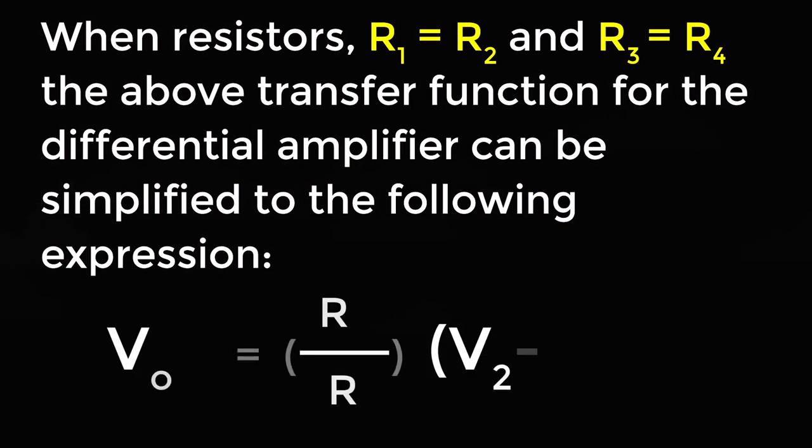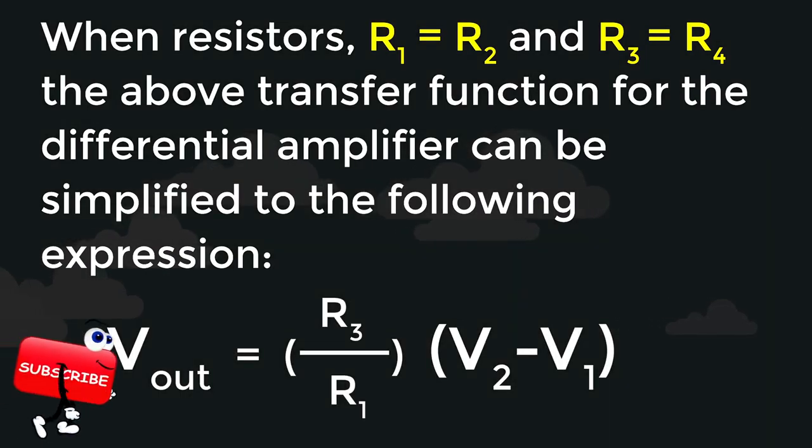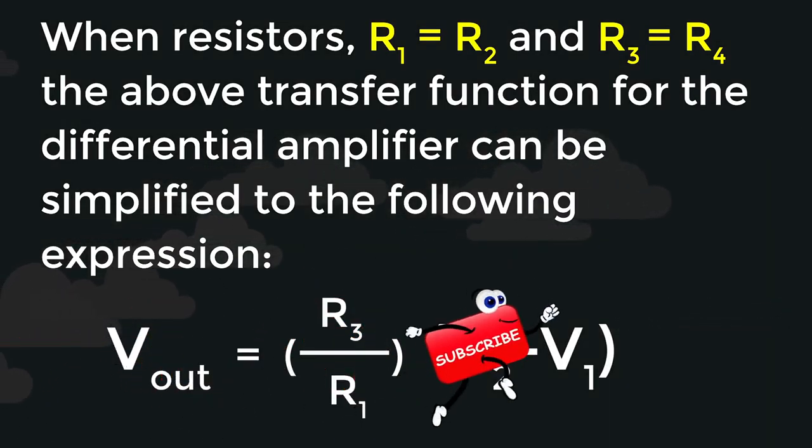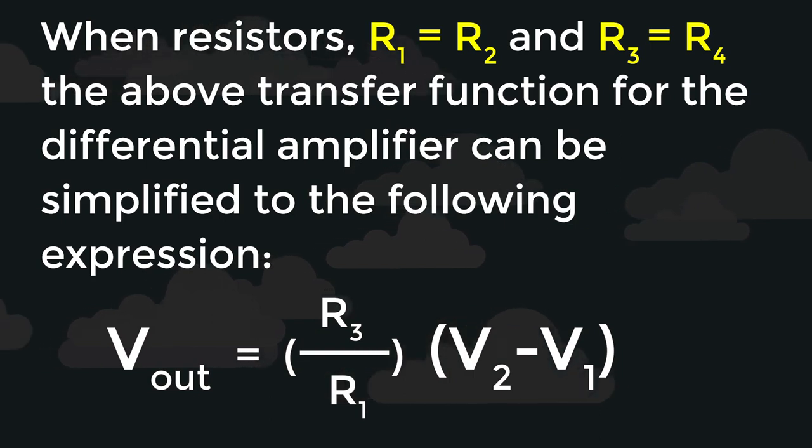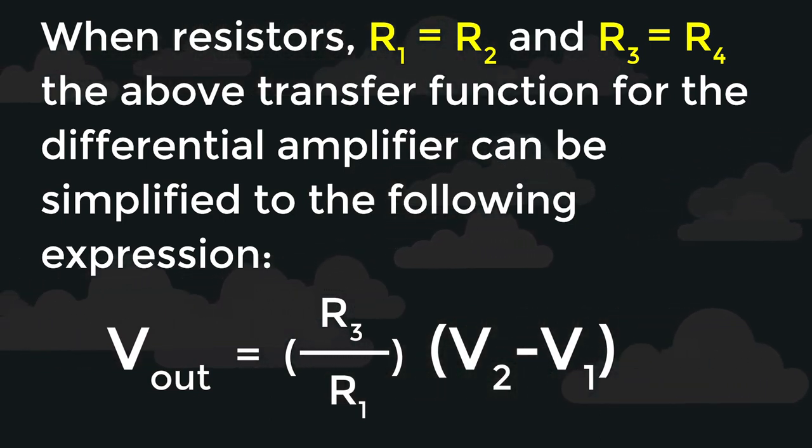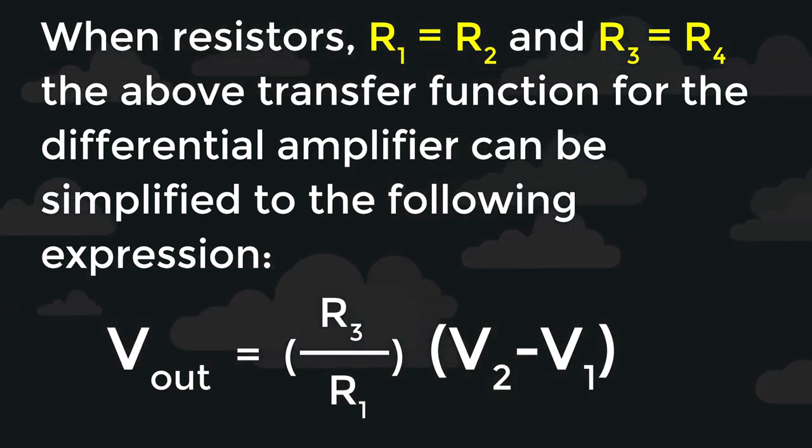When resistors R1 is equal to R2 and R3 is equal to R4, the above transfer function for the differential amplifier can be simplified to the following expression: Vout equals R3 by R1 into V2 minus V1.